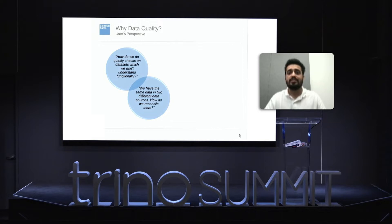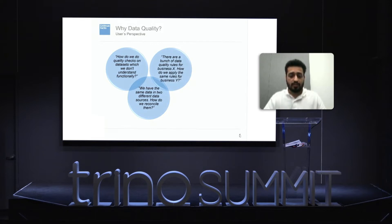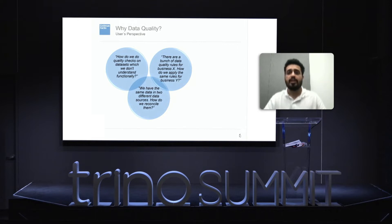How do we reconcile these different data sources to ensure that the data is accurate and correct? Very often, data quality rules might be applied to a particular data set but would be applicable to another as well. For example, team A might have developed certain data quality rules for their use cases, but the same might be applicable for team B. How do we make these rules more portable and easy to adopt holistically?